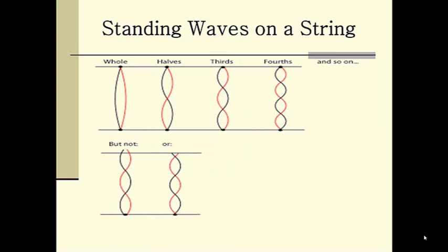Standing waves on a string. To just reiterate what we just saw, you can have various numbers of wavelengths, but they all have to be equal to whole or half wavelengths. If you look at the bottom, you cannot have a wavelength that is produced when it is partially completed at the end, because the string is fixed, and therefore there is a node at either end of the string.